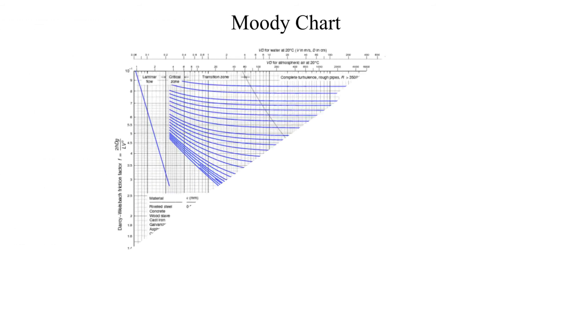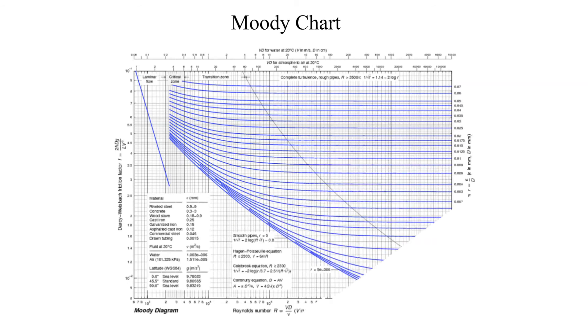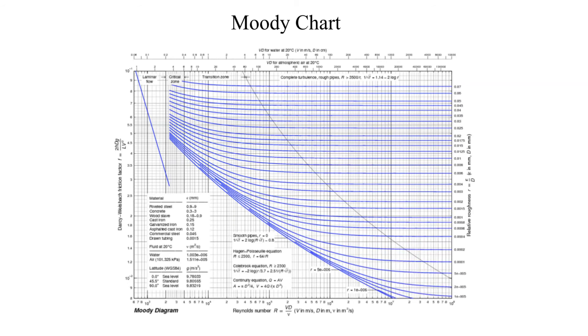The Moody chart is shown here. As usual, they are difficult to read. Values for the friction factor are given on the ordinate axis. The abscissa axis contains values for the Reynolds number. Relative roughness curves are plotted in blue. Not all values are plotted. We will often need to perform visual interpolation.